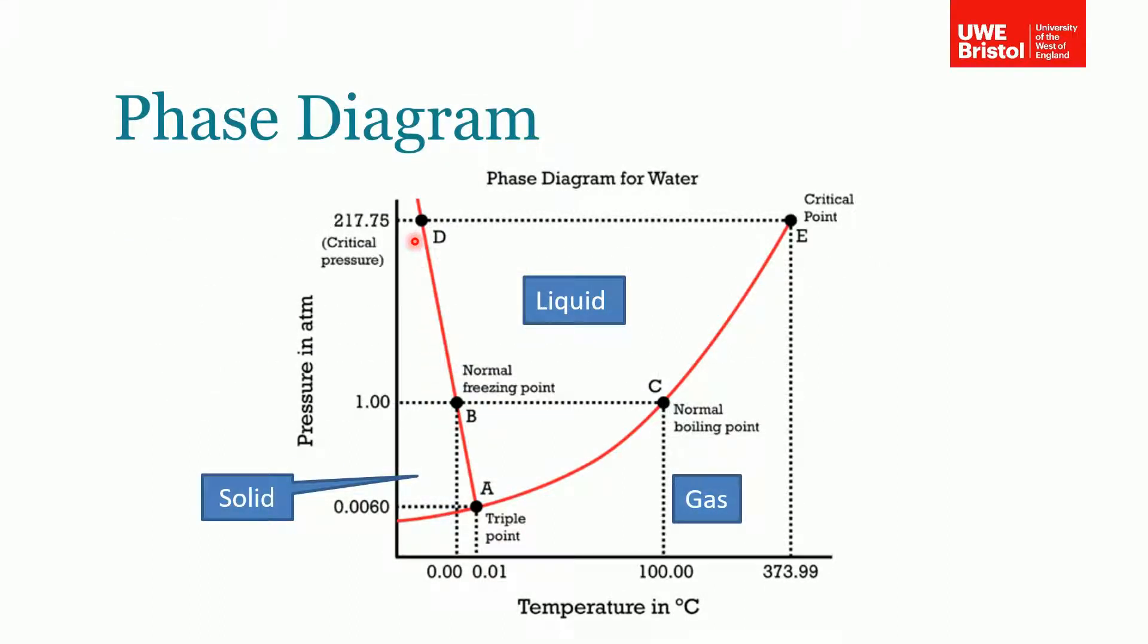The state of a substance can be defined both by its pressure and temperature on what's called a phase diagram. Here's an example for water. We have temperature across the bottom in degrees C and pressure in atmospheres on the side. One atmosphere is the pressure at sea level. If we have one atmospheric pressure and a temperature less than zero, as you probably know, the water exists as a solid, in other words ice.